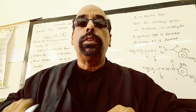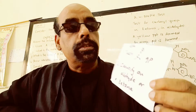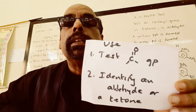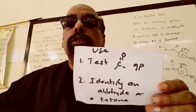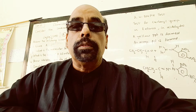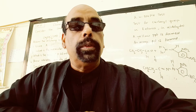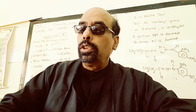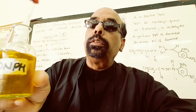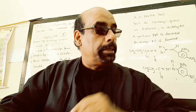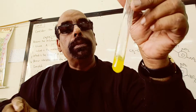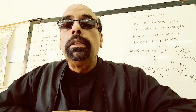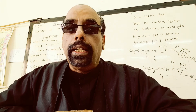This 2,4-DNPH test is used to test the presence of a carbonyl group. It is also used to identify an aldehyde or a ketone. To perform the test, take a solution of the liquid and add 2,4-dinitrophenylhydrazine. A yellow precipitate indicates the presence of a carbonyl group — either a ketone or an aldehyde.